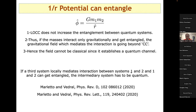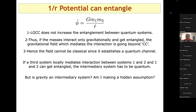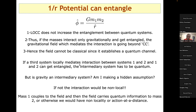A key question is: is gravity really an intermediary system, or does assuming it is introduce a hidden assumption? The papers argue that of course gravity must be an intermediary, because otherwise the interaction would be non-local — mass one couples to the field, the field carries quantum information to mass two. Without such an intermediary, you'd have action at a distance.